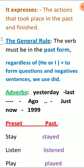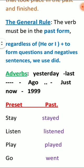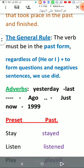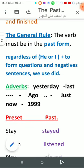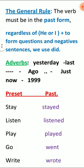The general rule: the verb must be in the past form. Regardless of the subject, the verb must be in the past form.